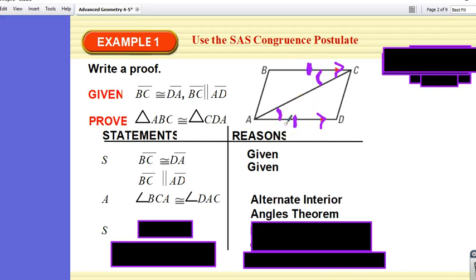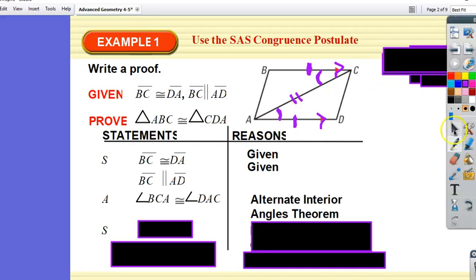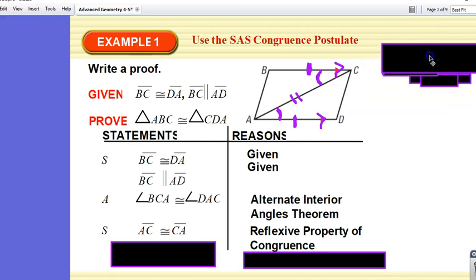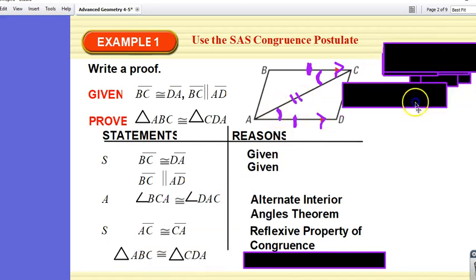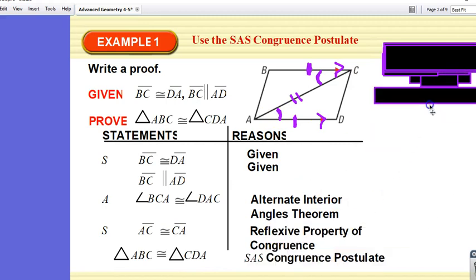Looking at the picture, do you guys see something else? Yes. Side AC is congruent to side CA. How do we know that? Reflexive. Good. So now we have side, angle, side. Therefore, the two triangles are congruent by side, angle, side.